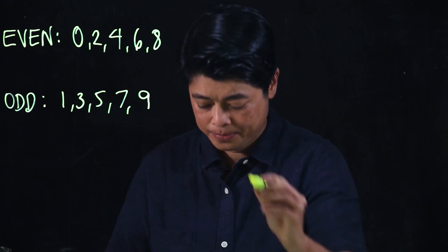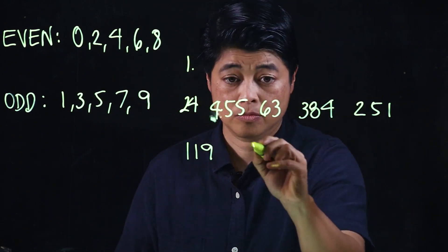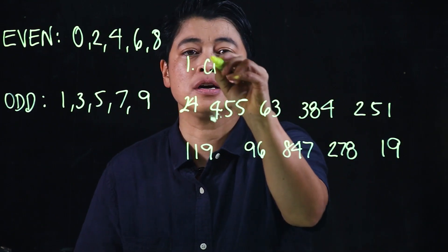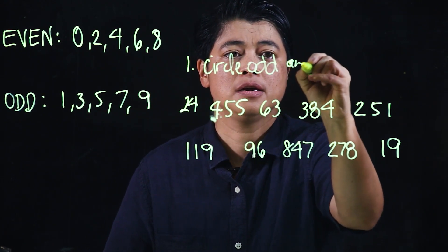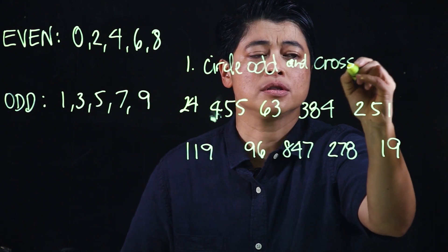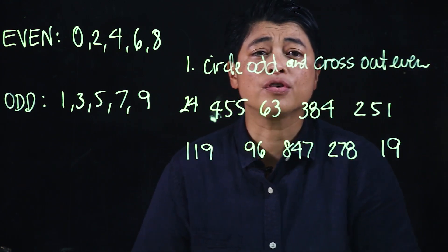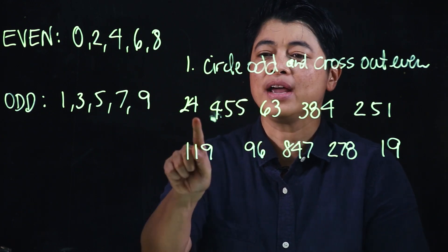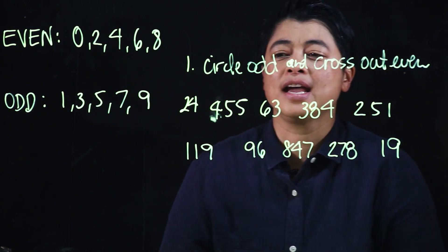The instruction says circle the odd and cross out even. If we're asked to circle the odd, we start with the odd, and all we have to do is look at the endings.